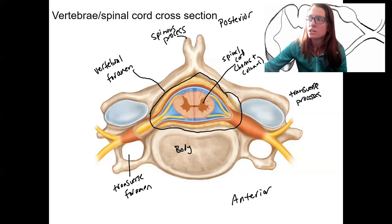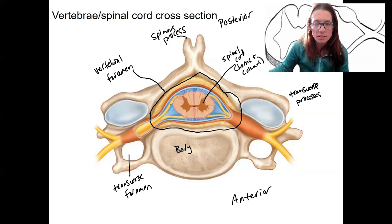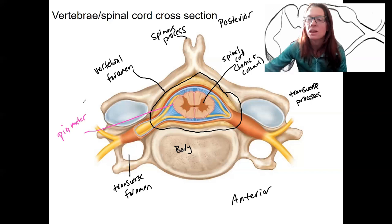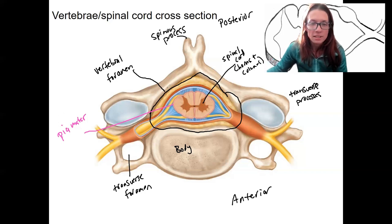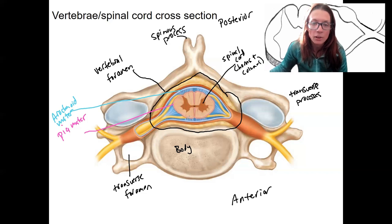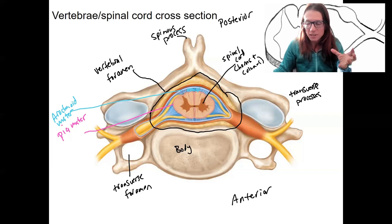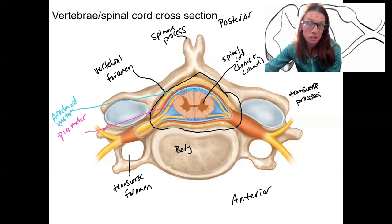Surrounding the spinal cord are three layers of meninges — you know this, and you know what they are. Pia mater is the layer closest to the spinal cord. This is the same as the brain — brain and spinal cord are both surrounded by the meninges, a type of membrane. The second layer is the arachnoid mater, and it has a subarachnoid space next to it where cerebrospinal fluid is located. That is this right here — the subarachnoid space with CSF.